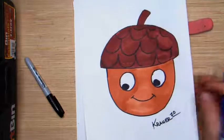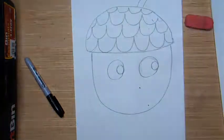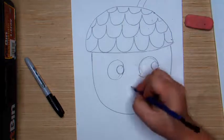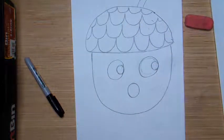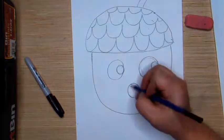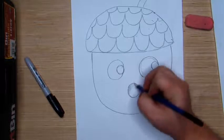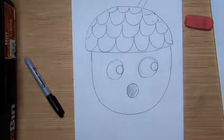Then we need to put the mouth in. You could do a smile like this, but you could do whatever. I am going to do kind of like a, just going, ooh. And I will darken that in. Just like this.